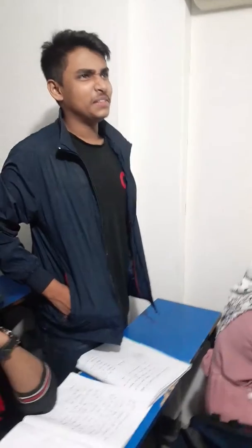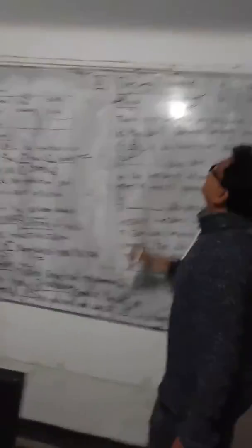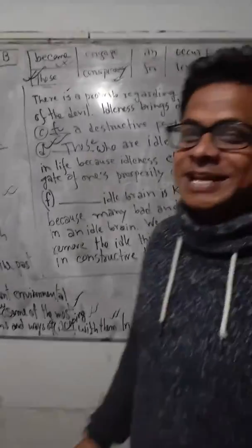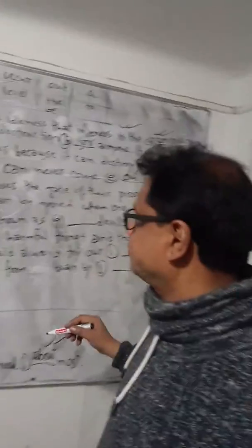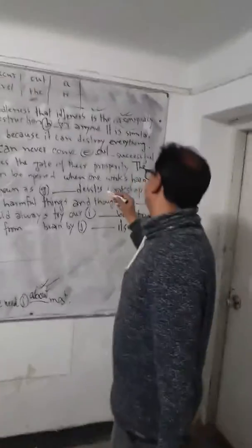Next gap: 'dash who are idle can never come dash successful.' For the first gap, we need a pronoun referring to people — the answer is 'those.' Those who are idle can never come out successful, because idleness closes the gate of their prosperity.